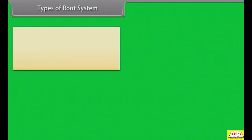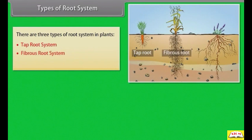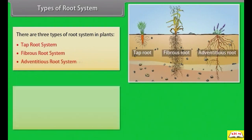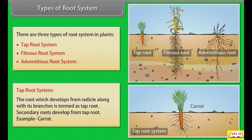There are three types of root system in plants: tap root system, fibrous root system, and adventitious root system. The root which develops from the radicle along with its branches is termed as the tap root. Secondary roots develop from the tap root. Example: carrot.